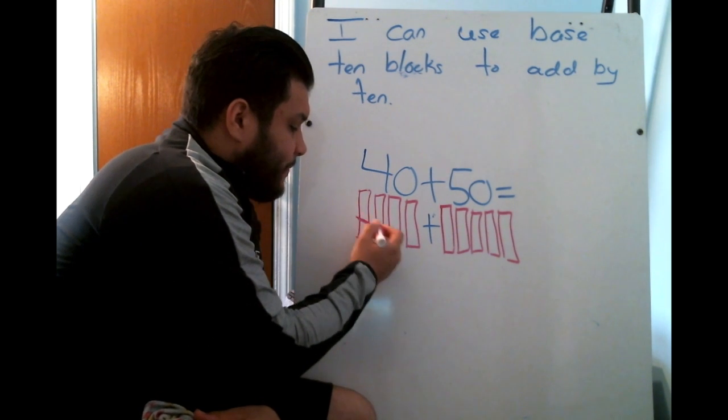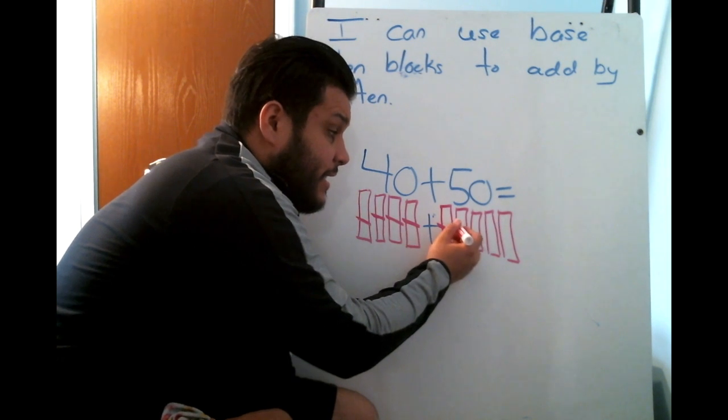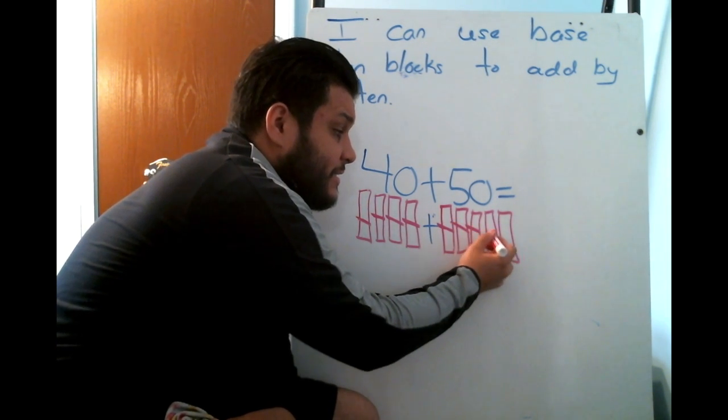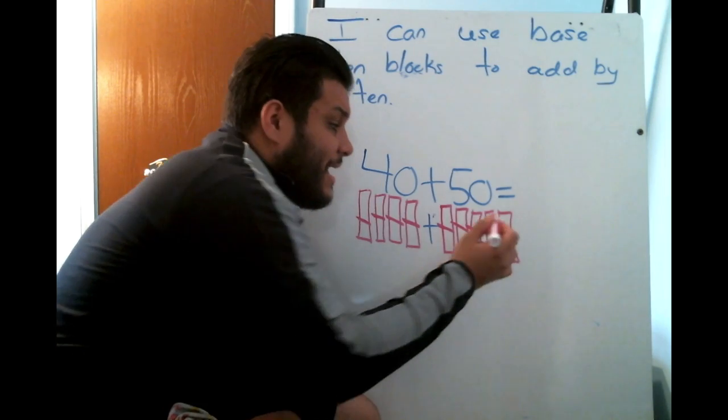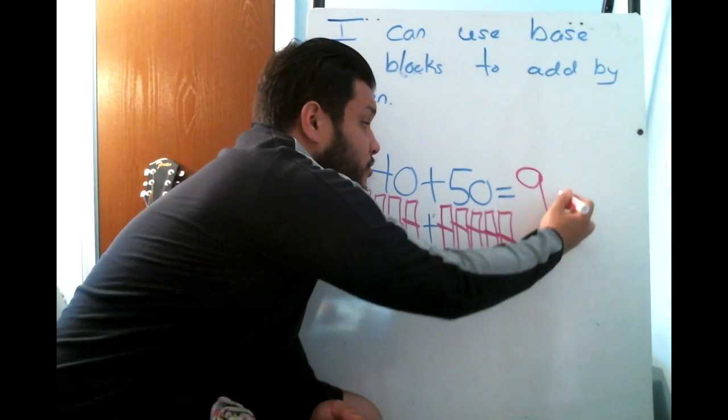So count with me to see how much is 40 plus 50. We have 10, 20, 30, 40, 50, 60, 70, 80, 90. 40 plus 50 equals 90.